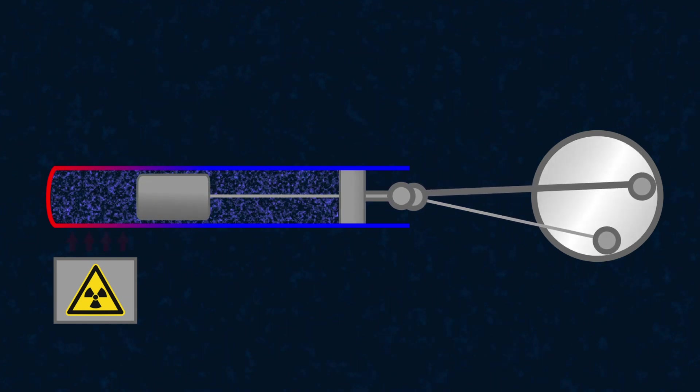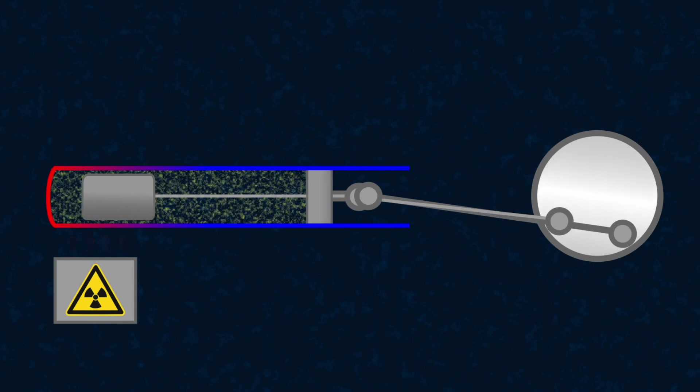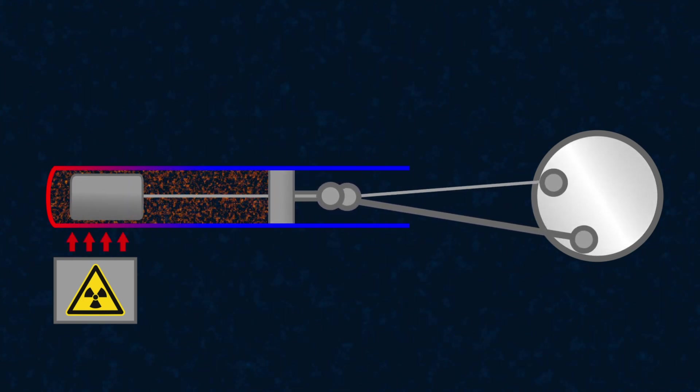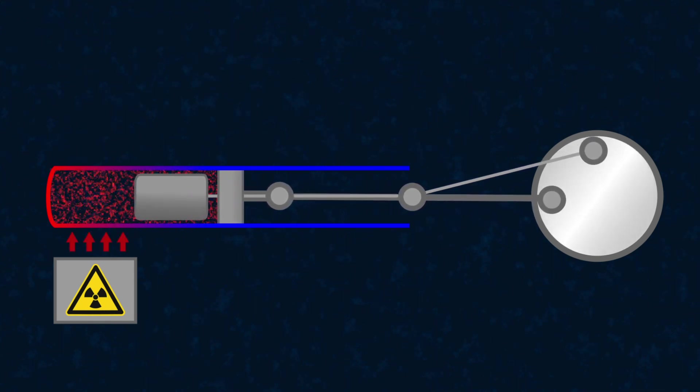Displacing in this way, the displacer piston performs its main function. It displaces the gas from the hot part of the cylinder to the cold part. Here, the gas cools down and compresses, causing the working piston to move to the left.